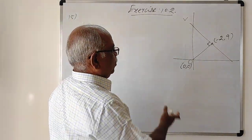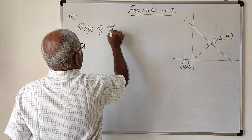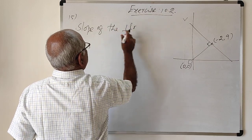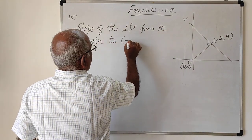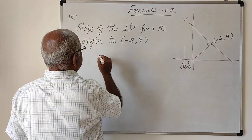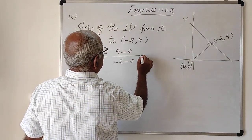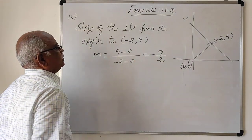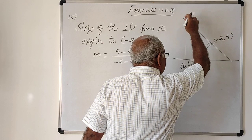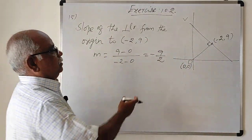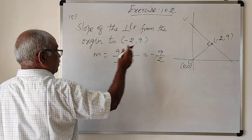The slope of the perpendicular from the origin to the line L — slope of the perpendicular from the origin to (-2, 9). That is slope = (y2 - y1)/(x2 - x1) = (9 - 0)/(-2 - 0) = -9/2. So the slope of the perpendicular line is -9/2. The line drawn from the origin is perpendicular to the given line.